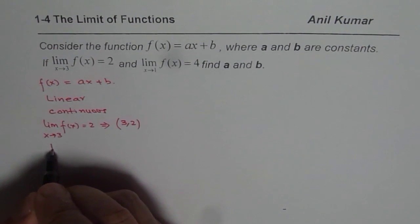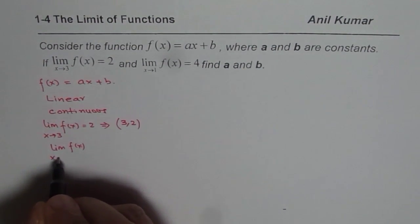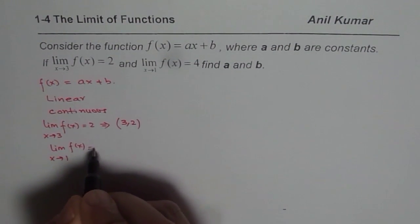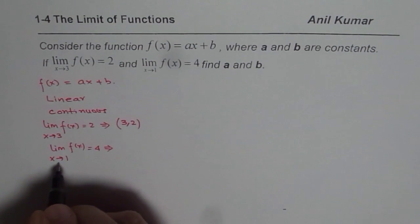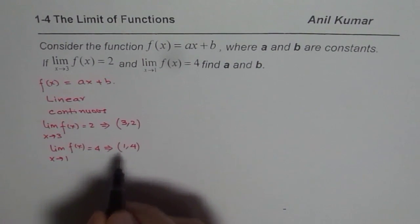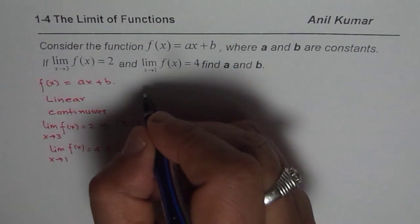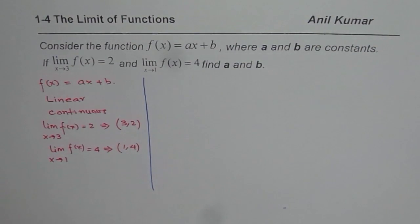Similarly, when we say that the limit of the function f(x) as x approaches 1 is equal to 4, it implies that the point on the function is (1, 4). Value of the function at 1 is 4. So these are important things to understand before we begin solving this question.